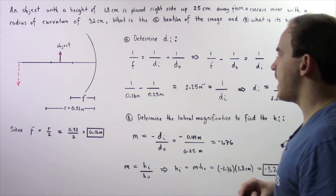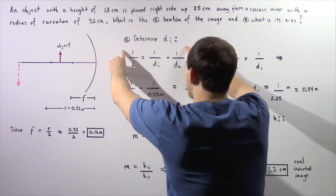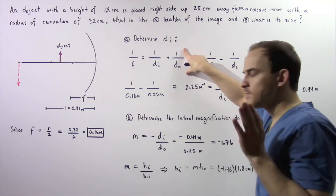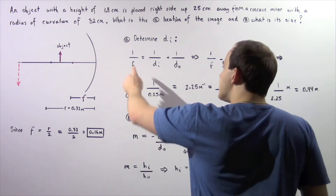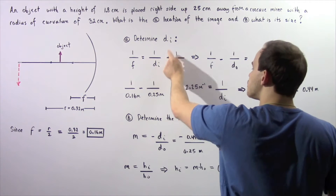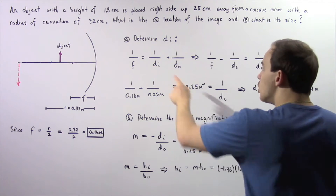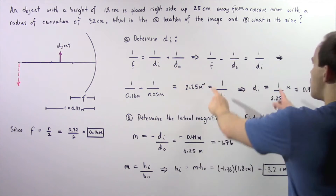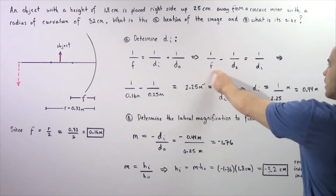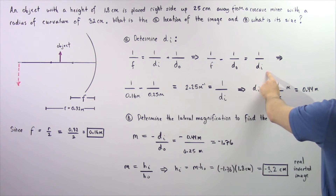We're going to use this result in part A. We want to apply the mirror equation, which was derived in the previous lecture. It tells us that 1 divided by the focal length is equal to 1 divided by the image distance plus 1 divided by the object distance. Since we're looking for the image distance, we rearrange to get: 1 over F minus 1 over the object distance equals 1 over the image distance.